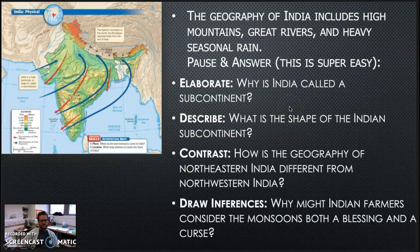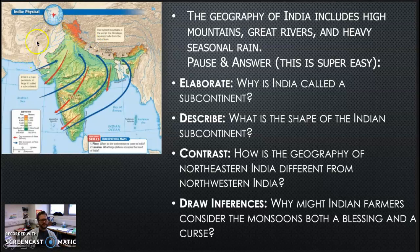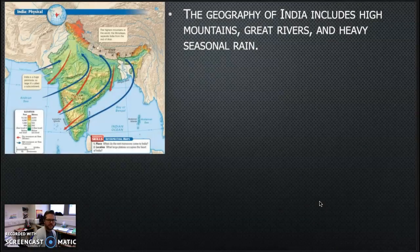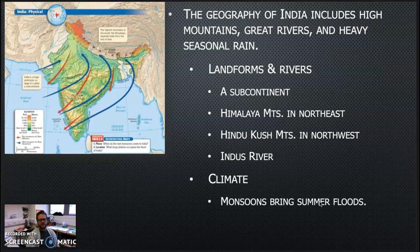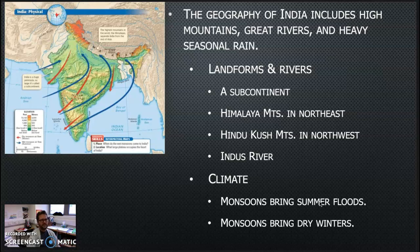You don't have to get too deep into that. How is the geography of northeastern India different from northwestern India? Well, in the northeast we have mountains — the Himalayas. In the northwest, we have the Indus River and the Hindu Kush Mountains. We have two different mountain ranges, but we also have a river valley and a desert up here. Why might Indian farmers consider the monsoons both a blessing and a curse? Climate-wise, we have monsoons that bring summer floods and monsoons that also bring dry winters. We'll come back to that at the end of this video.